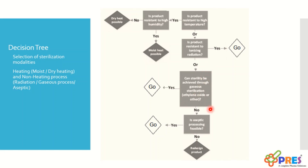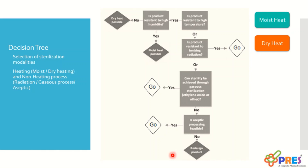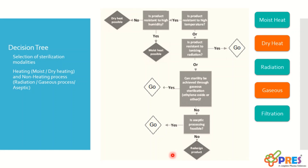If both heat and radiation methods are not suitable, we can further proceed to aseptic processing, where we can filter the product individually, or even if filtration is not possible, all components can be individually sterilized and assembled in a highly controlled environment. If this is also not an option, we probably need to work on the product design. In summary, the modalities are: moist heat (temperature and humidity-driven), dry heat (temperature only), radiations, gaseous sterilization, filtration, and combinations as part of aseptic processing.